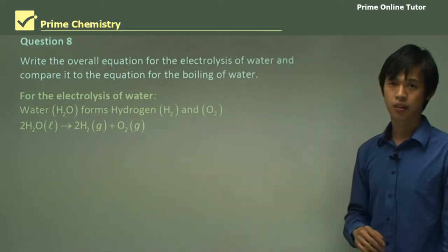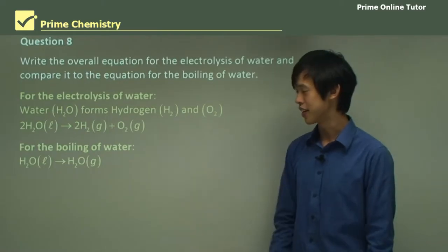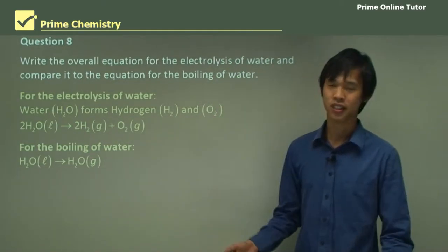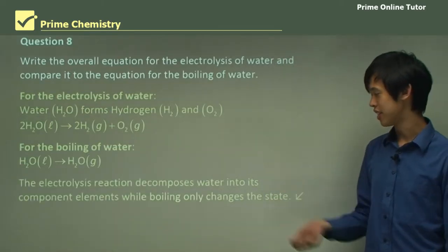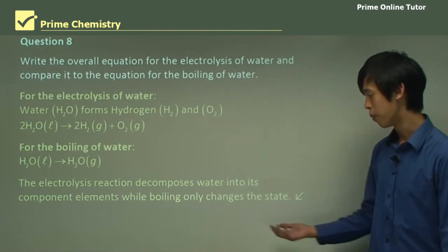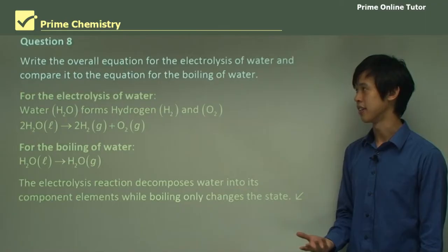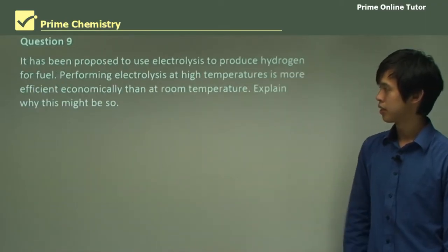So that's one way of answering questions when you don't know what the reaction is. Just by writing down all the things that you do know and then just balancing the equation. Now for the boiling of water, all you've done is you've turned water liquid into water gas. So that's the difference. The electrolysis reaction decomposes water into its component elements, while boiling just changes the state as you can see.